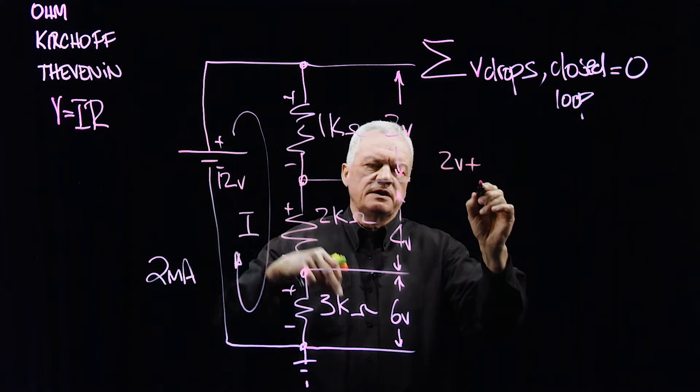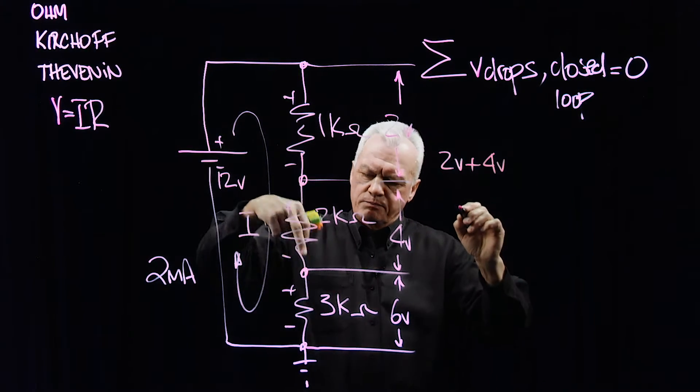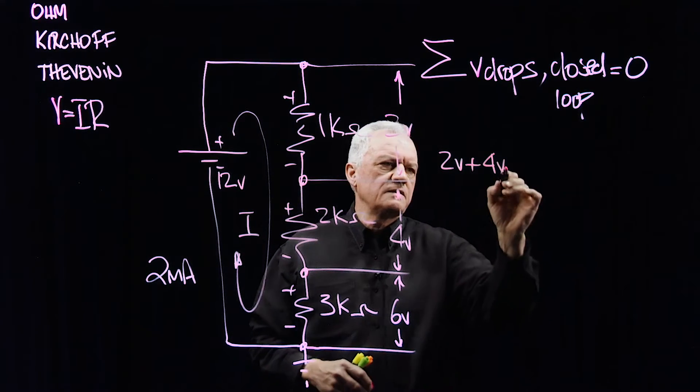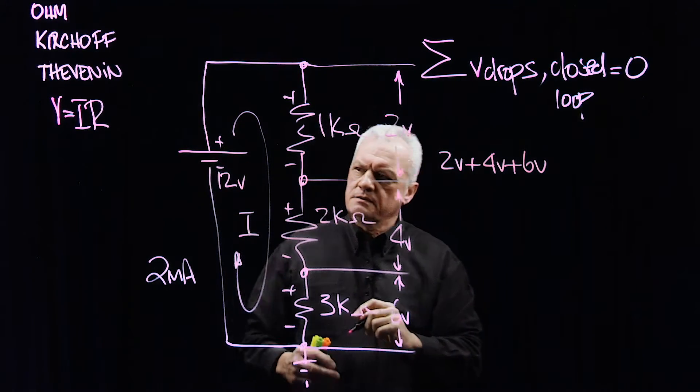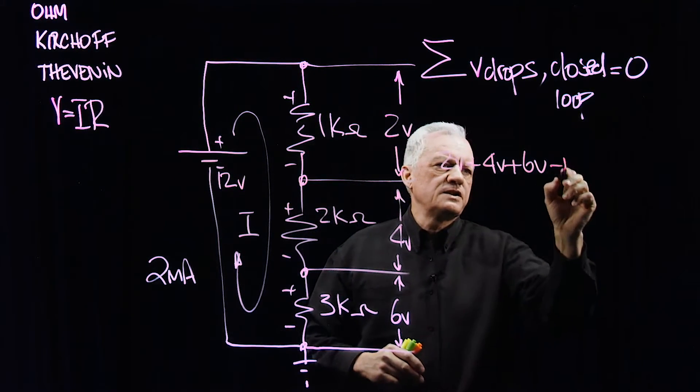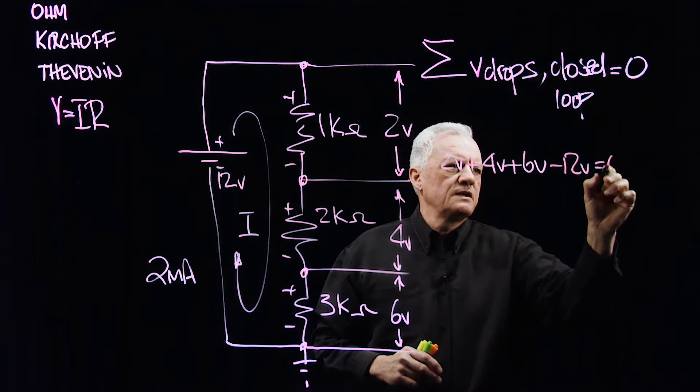Plus the voltage here, which was 4 volts, plus the voltage here, which is 6 volts, minus the voltage here, which was 12 volts, equals to zero.